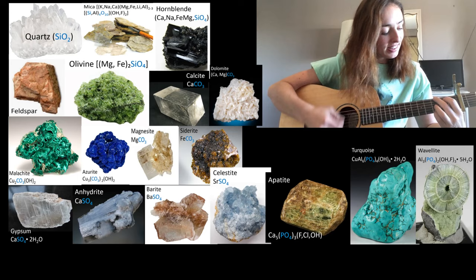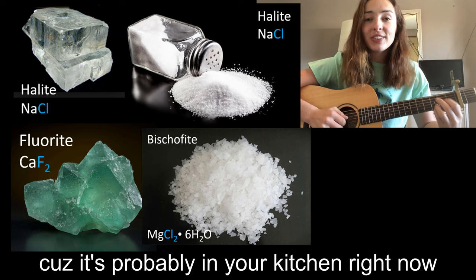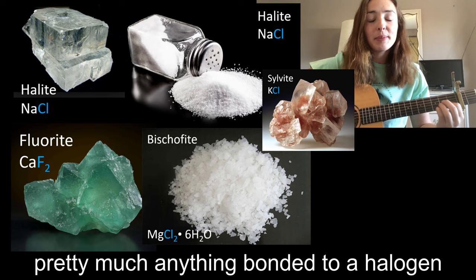Now we're on to the halides, which include sodium chloride — you may have heard of that, since it's probably in your kitchen right now. The halides include pretty much anything bonded to a halogen, such as chlorine, fluorine, bromine, or iodine.